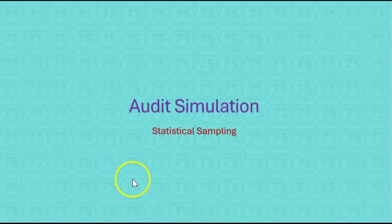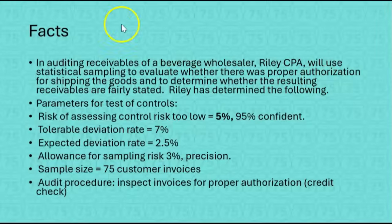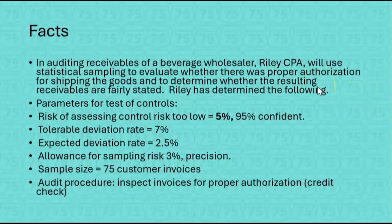Here's an audit sim on statistical sampling. In auditing receivables of a beverage wholesaler, Riley's CPA will use statistical sampling to evaluate whether there was proper authorization for shipping the goods and to determine whether the resulting receivables are fairly stated. Riley has determined the following. They're giving us parameters for testing controls, and the control being tested is whether there was proper authorization for shipping the goods.